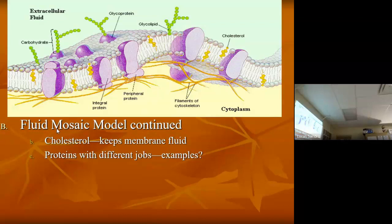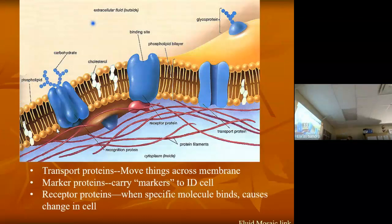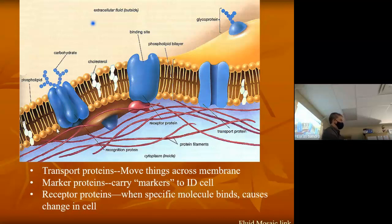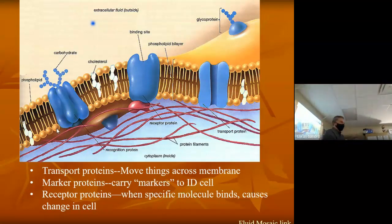From all the way on the outside — transport, marker, receptor. By the way, marker proteins: why would a cell need what's basically an ID tag? Why would a cell need to identify itself? What use is that? Well, it needs to identify itself so it knows — I don't know. Is there any reason a cell would need to prove it's a cell of yours? To make sure it's not like a sickness? So which body system are we going to be talking about here that's going to be going around checking ID?